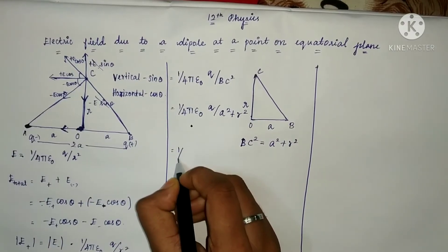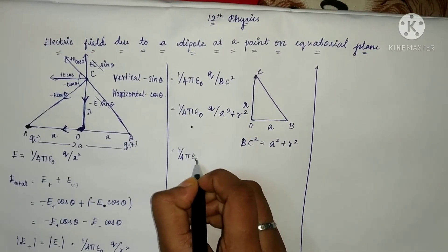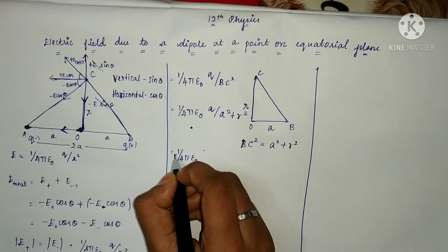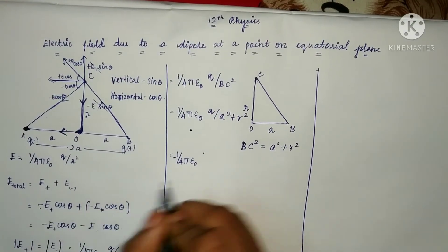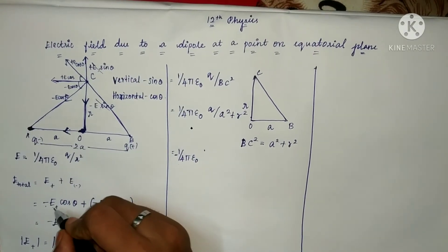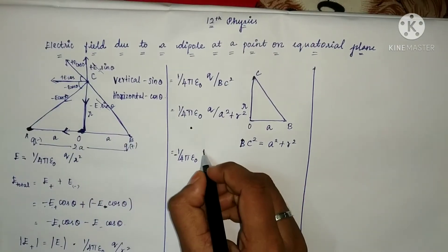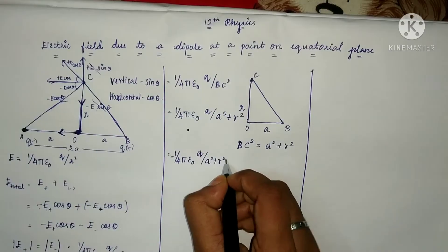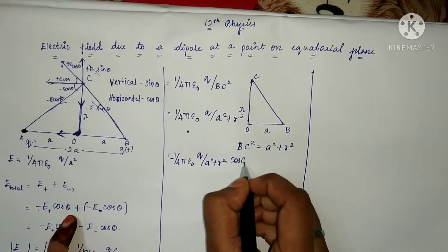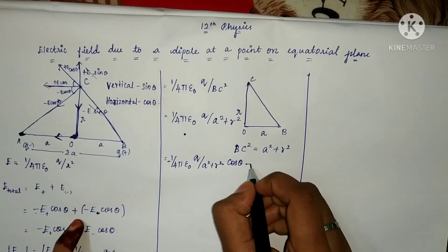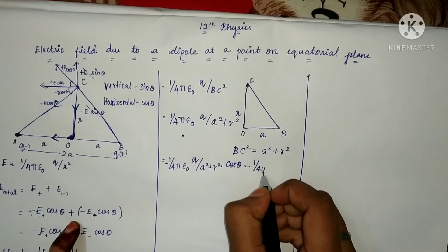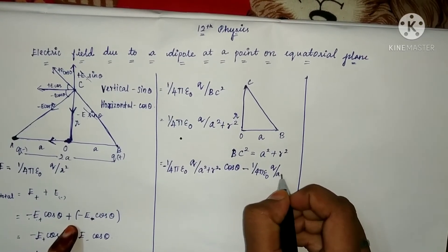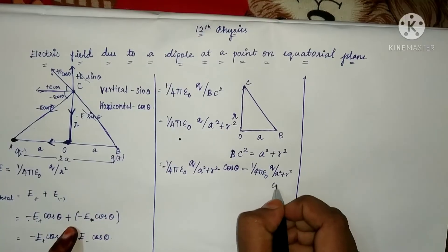We substitute into the formula: 1 by 4π ε₀. Then we check this against 1 by 4π ε₀. Now, here we can change and write: 1 by 4π ε₀ times q by (a² plus r²) times cos θ. This gives us the expression for E total in terms of cos θ.